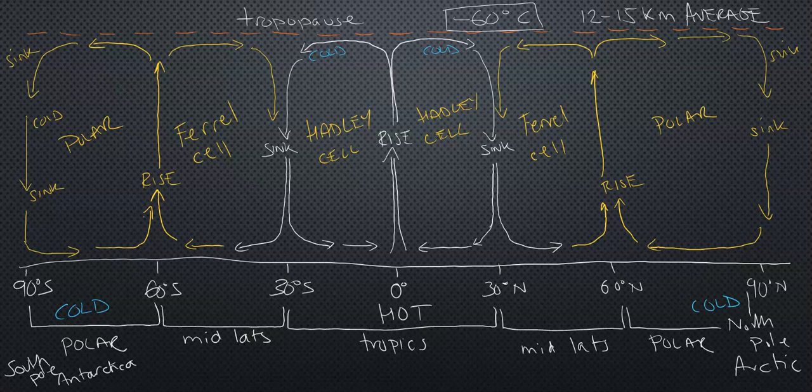So we have a symmetrical set of three cells: Hadley, Ferrel, and Polar. The simple heating and cooling of air in the troposphere from the equator, because the equator is heated more than the poles and you have this differential heating, creates these three symmetrical convective cells in the troposphere: the Hadley around the equator and the Ferrel in the mid-latitudes.